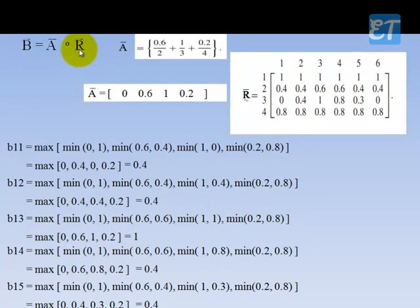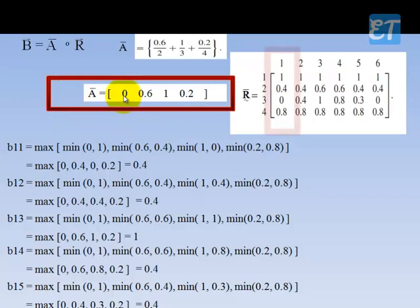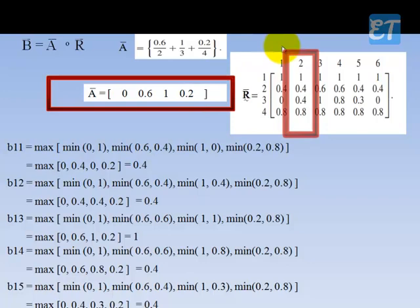We compute B as A composition R. Performing max-min operation: to find B11, we take the first row and first column. Min of 0 and 1 is 0; min of 0.6 and 0.4 is 0.4; min of 1 and 0.0 is 0; min of 0.2 and 0.8 is 0.2. The maximum amongst these is 0.4.